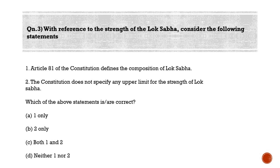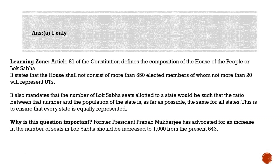The correct answer is option A — one only. Article 81 of the Constitution defines the composition of Lok Sabha. The maximum strength of the Lok Sabha envisaged by the Constitution was 552, which includes 530 members to represent states, 20 to represent Union Territories, and not more than two members of the Anglo-Indian community to be nominated by the President.